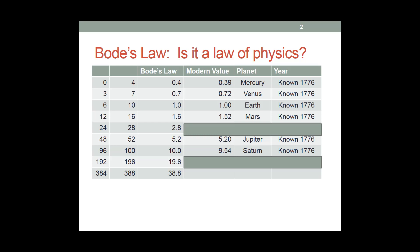Now, you'll notice that there are planets we know of that aren't in the list. So they weren't known in 1776. And there are entries, like at 2.8, where Bode's Law predicts something that we don't know about. So what did they do? They went and they started looking.